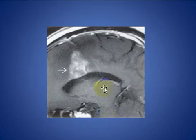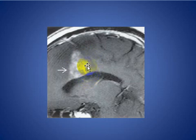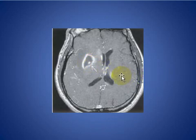Here we see a periventricular enhancing mass lesion with ring enhancement in the body of the corpus callosum extending to the periventricular white matter in a patient with AIDS. Periventricular location helps differentiate from toxoplasmosis. Another patient with primary CNS lymphoma shows T1-weighted imaging with ring enhancement.